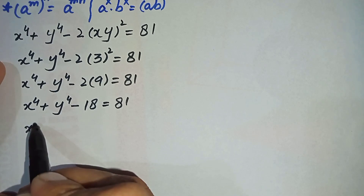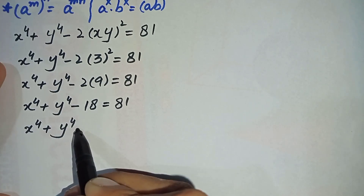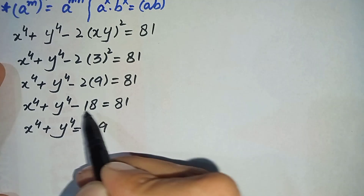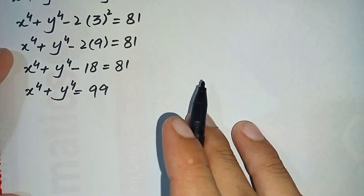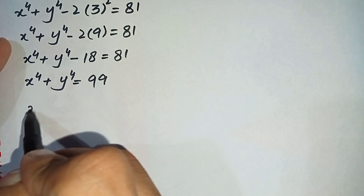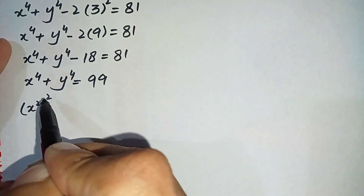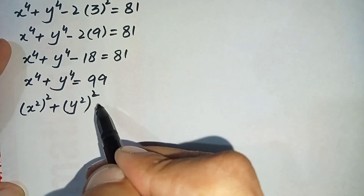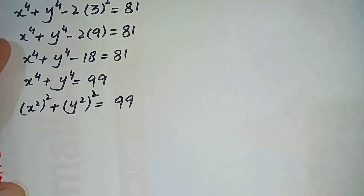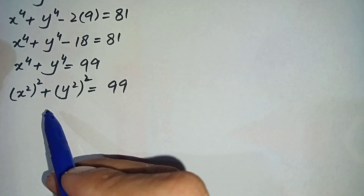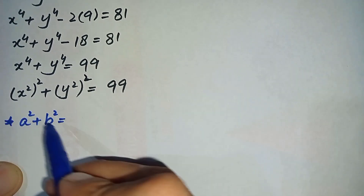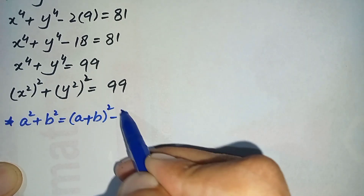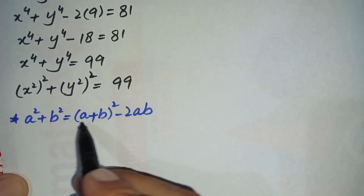So x to the 4th plus y to the 4th is equal to 81 plus 18, which is 99. Next we can write x to the 4th as (x squared) whole squared, and similarly for y, (y squared) whole squared is equal to 99. Now on the left hand side again we will use the algebraic identity: a squared plus b squared is equal to (a plus b) whole square minus 2ab.